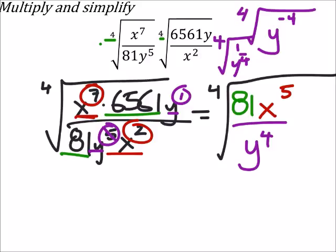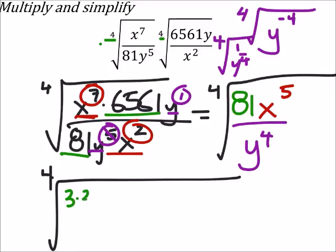Alright, so let's split this thing up. We are going to have the fourth root of - 81 is 3 times 3 times 3 times 3, then I've got x times x times x times x.